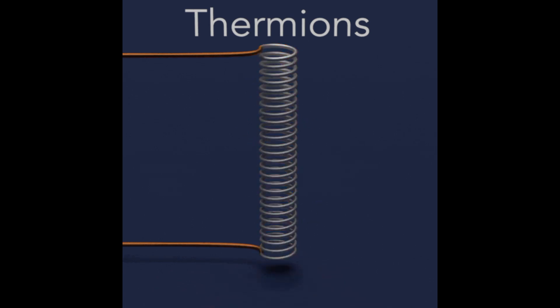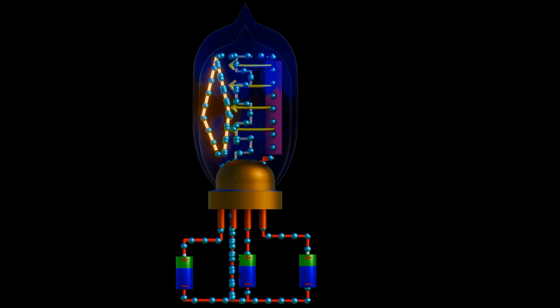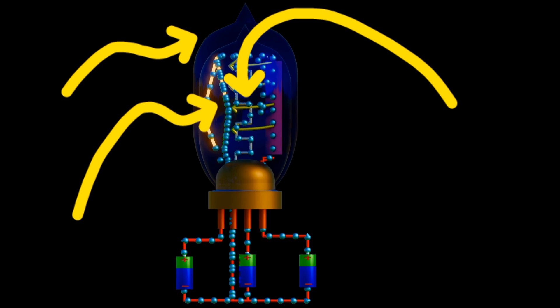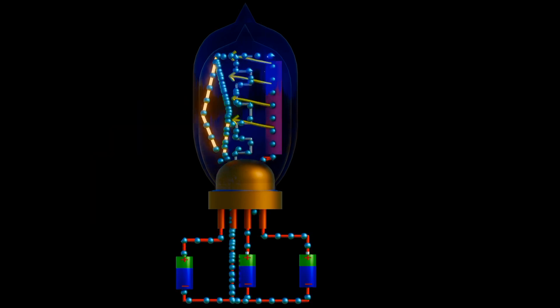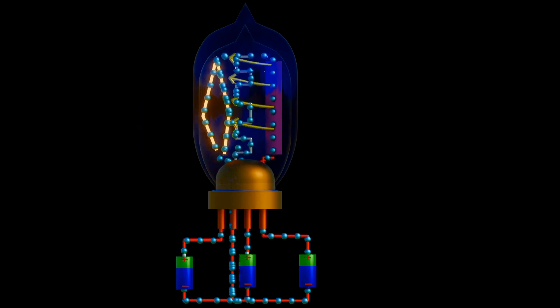The heated filament caused electrons to be emitted and they were collected by the wire. Early tubes mimicked Edison's configuration, which used a glass housing, a filament to provide electrons and an anode or plate operating at a positive electrical charge to collect emitted electrons.